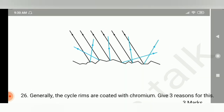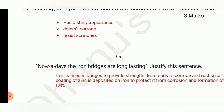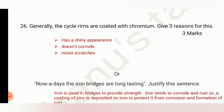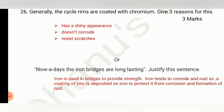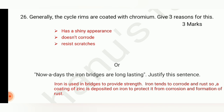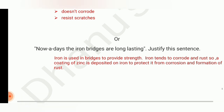Question number 26: generally the cycle rims are coated with chromium — give three reasons. The option question is: nowadays iron bridges are long-lasting — justify this sentence. For the cycle rims answer: chromium gives a shiny appearance, doesn't corrode, and resists scratches. For the option question about iron bridges being long-lasting, let us see the answer.